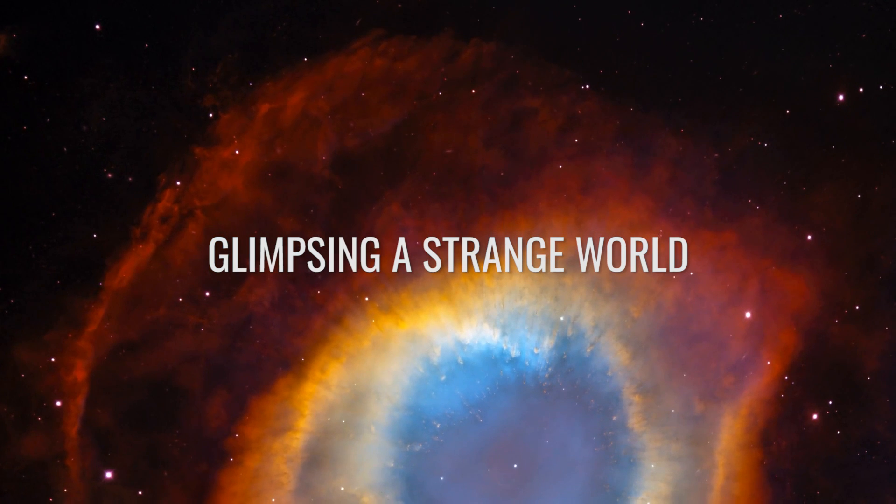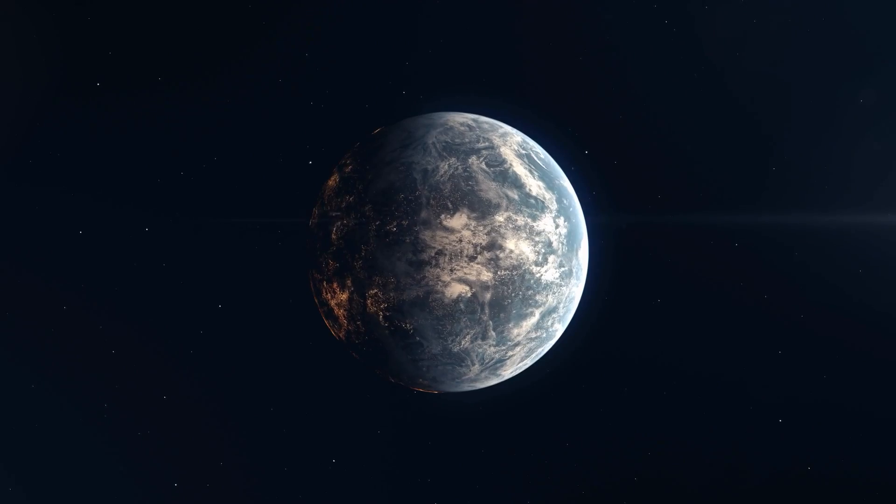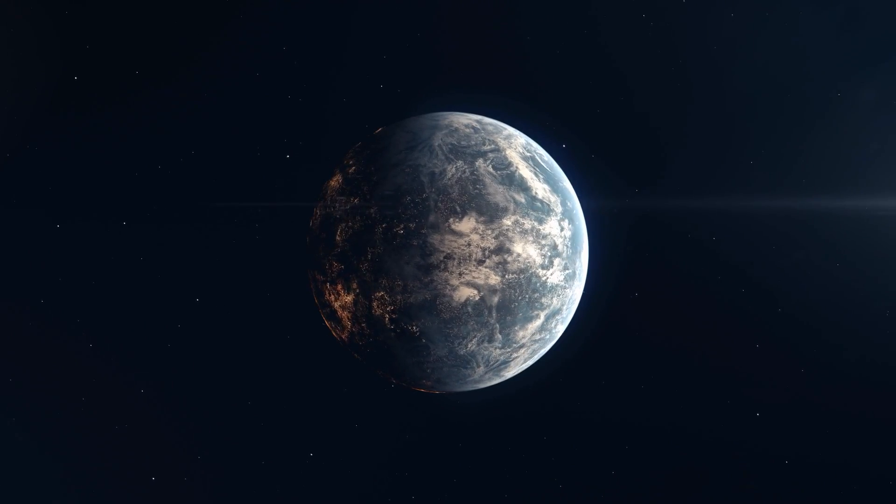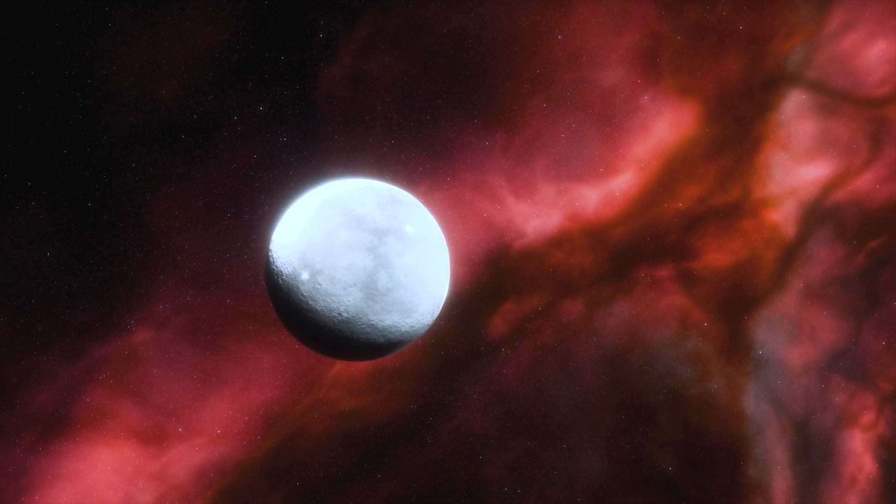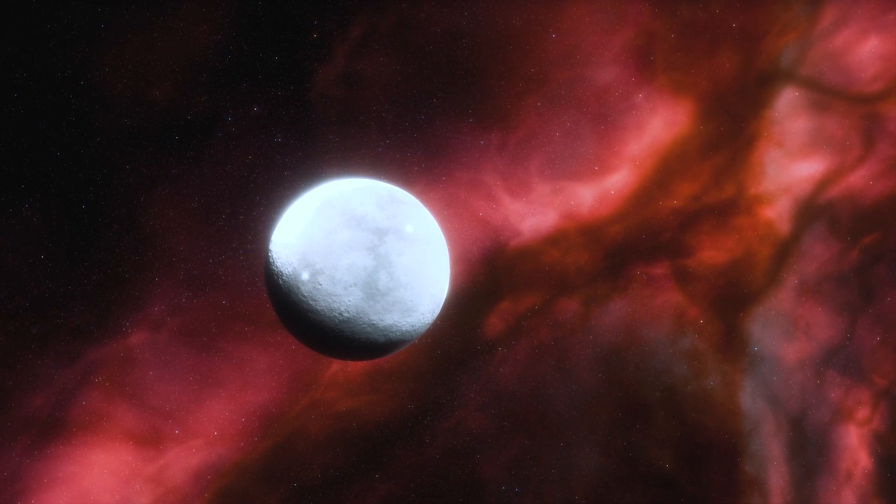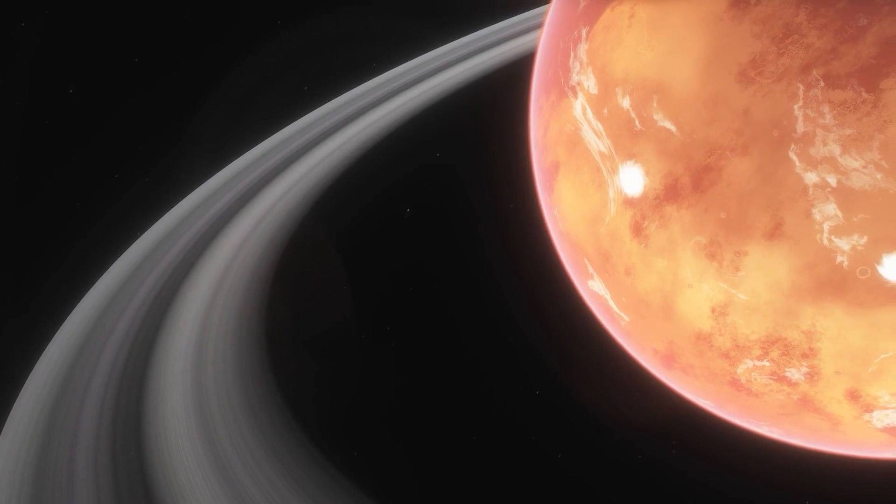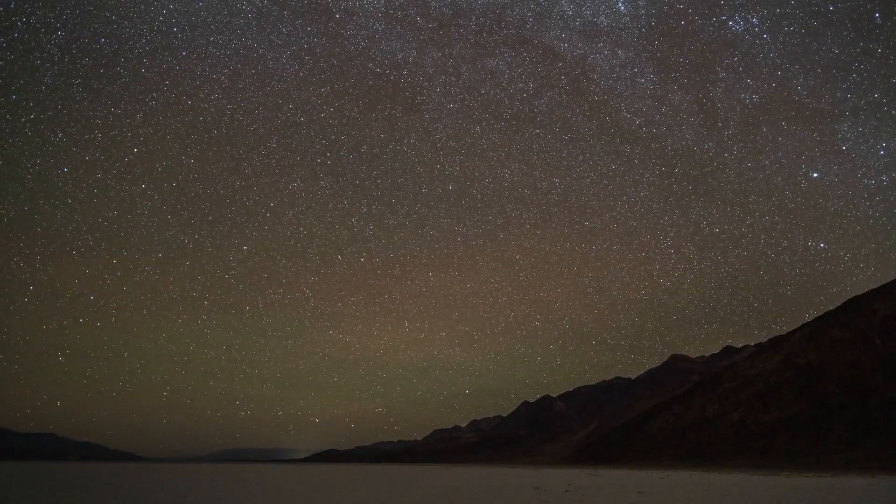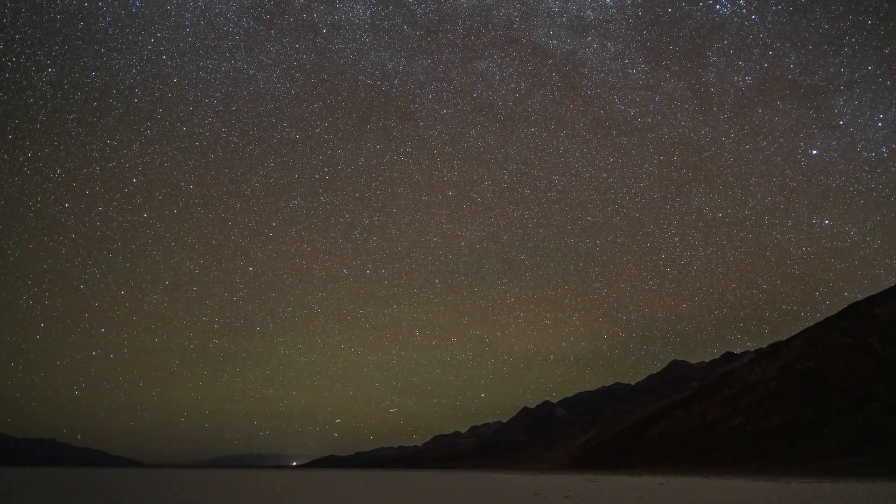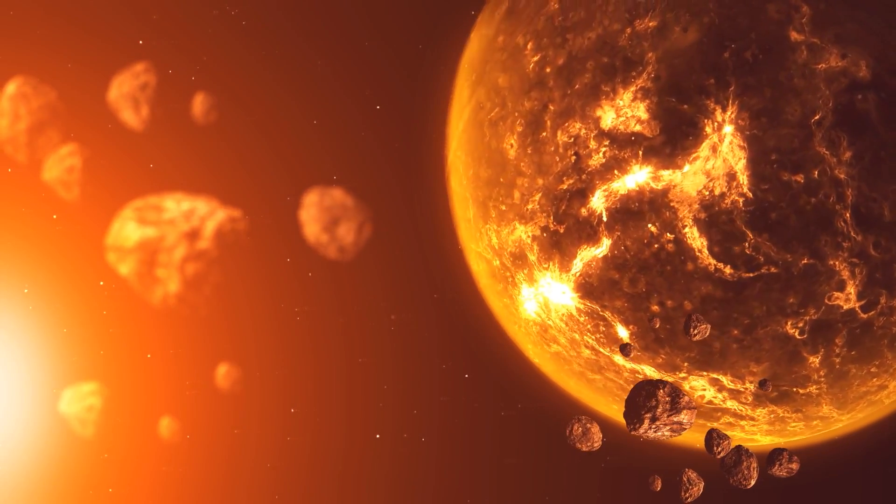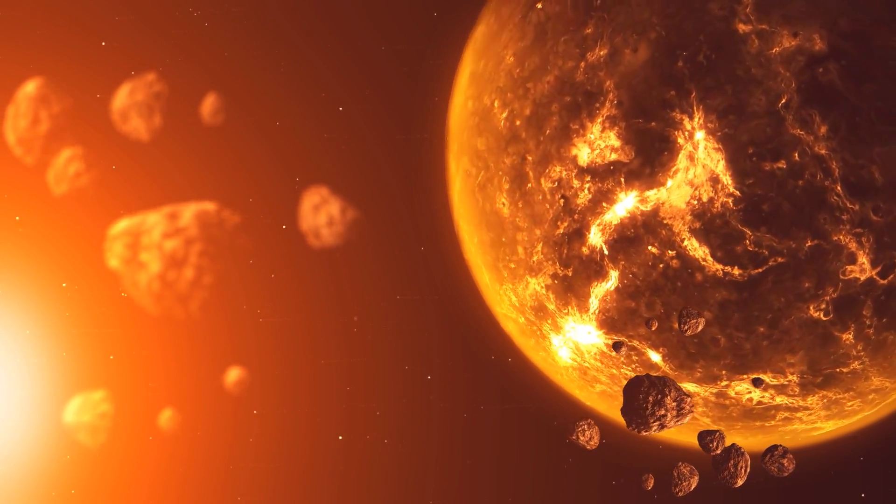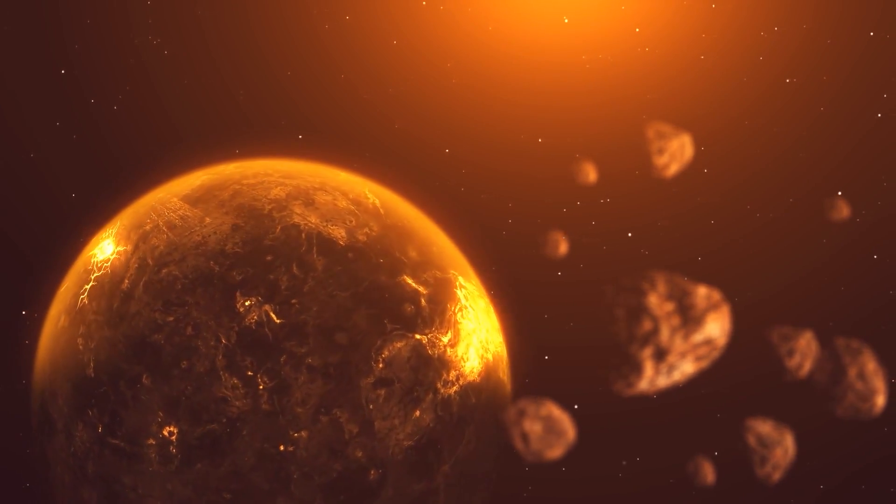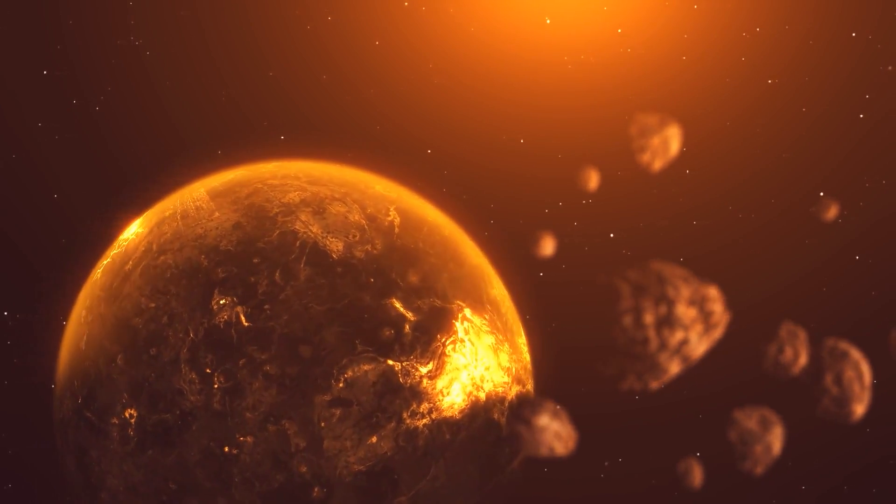Glimpsing a Strange World: As we all know, planets don't usually have their own luminosity. The light that makes the celestial bodies shine is generated by their albedo, or in other words, by the reflection of the incident starlight. However, the matter is somewhat different with still very young planets. In fact, these celestial bodies are still so hot that they glow red, and they are even brighter in the infrared part of the spectrum.